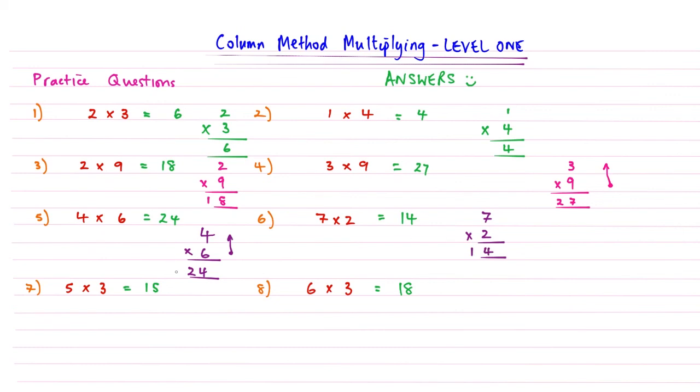Question 7: 5 lots of 3. And 'lots of' is the same as multiply by or times by. Again, into the 10s column, into the units there. Make sure you don't have a dodgy line at the bottom.